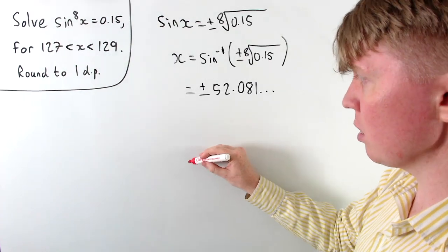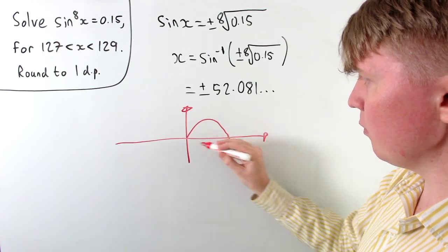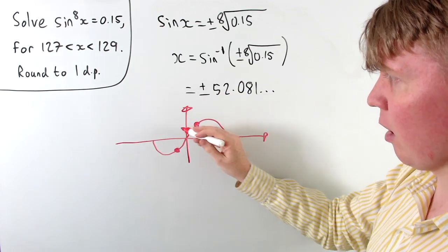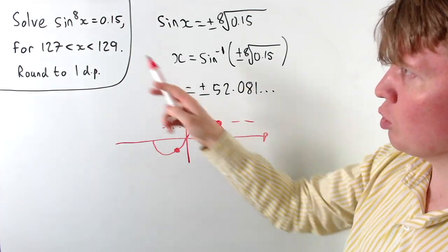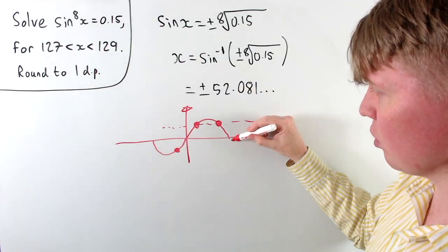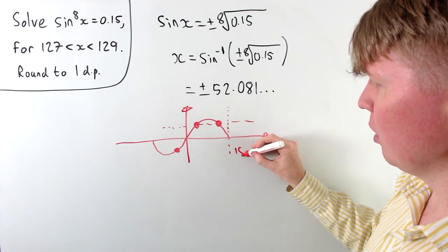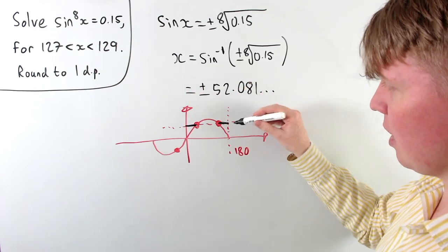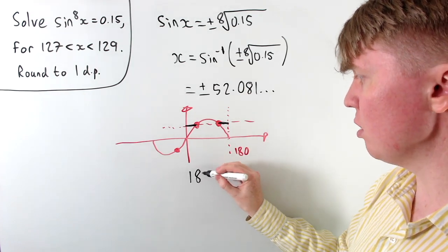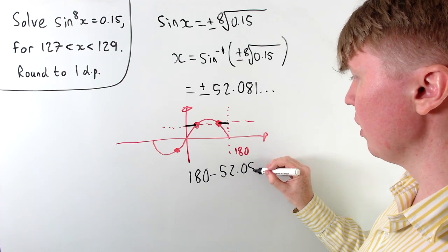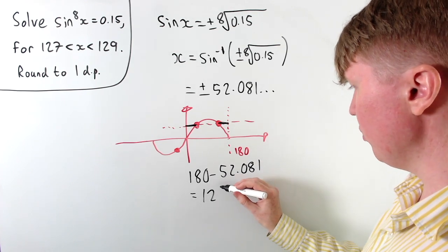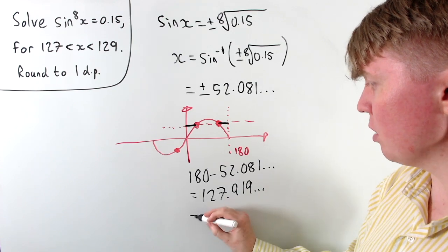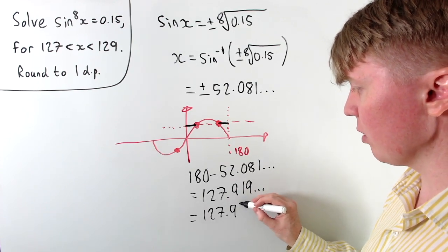If we draw a sketch of the sine graph, at the moment we've got positive 52 and negative 52.081 as two roots. But what we're really looking for is the root between 127 and 129, since the graph goes up to 180 degrees. By symmetry, the distance from 180 is the same 52.081, so we do 180 minus 52.081, giving us around 127.919. Rounding to one decimal place, we get 127.9 degrees.